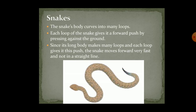The last creature here is the snake. If you have seen a snake, you might have noticed it crawls or slithers in a loop position — not in a straight line. This helps the snake attach its body to the ground and push its head forward. The snake's body curves into many loops, and each loop gives it a forward push by pressing against the ground. Since its long body makes many loops and each loop gives a push, the snake moves forward very fast. Moving in a straight line would be very slow. There is also a long backbone present in the snake which helps it bend and straighten its body. Here we complete Chapter 8. Thank you everyone.